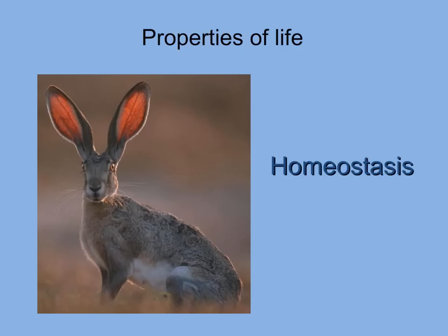The fourth property that all living organisms possess is the regulation of internal environments, or homeostasis. The jackrabbit has to maintain a certain internal temperature in order to sustain all the chemical reactions that keep the rabbit alive in the arid environment it lives in. But as the air temperature increases during the daytime, so does the rabbit's temperature. How does it keep from overheating? Well, look at the ears — do you see the large arteries running through the ears?